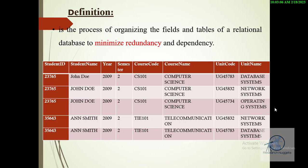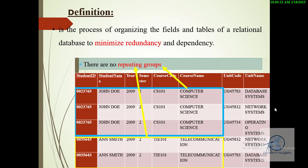However, as we are going to note, we have redundancies — as you can see we are repeating the student ID, the student name, the year, the semester, the course code, and the course name, to cater for the more than one unit that a given student is doing. Therefore we need mechanisms to remove this redundancy.